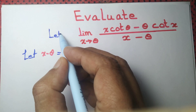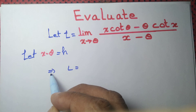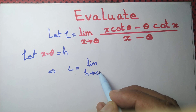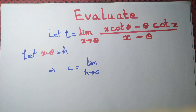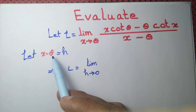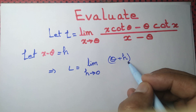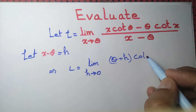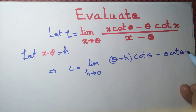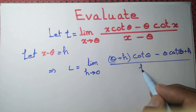So let L equal to this limit. Then L equals the limit as h tends to 0. We are taking x minus theta equal to h, so x equals theta plus h, and h is tending to 0. In the denominator, we simply have x minus theta equal to h.